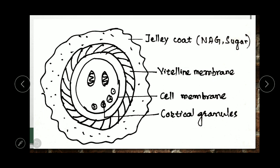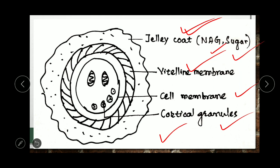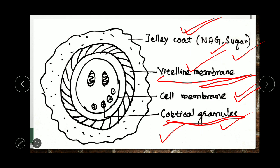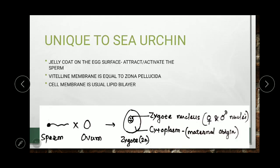The egg has four layers: the jelly coat, the vitelline membrane (shown as a dashed line), the cell membrane, and the cortical granules. The jelly coat is a protective covering made of N-acetyl glucosamine and sugars. The vitelline membrane is similar to the zona pellucida of mammals and performs the same function. The cell membrane is a lipid bilayer. The cortical granules are calcium-containing granules present in the cortex of the egg.